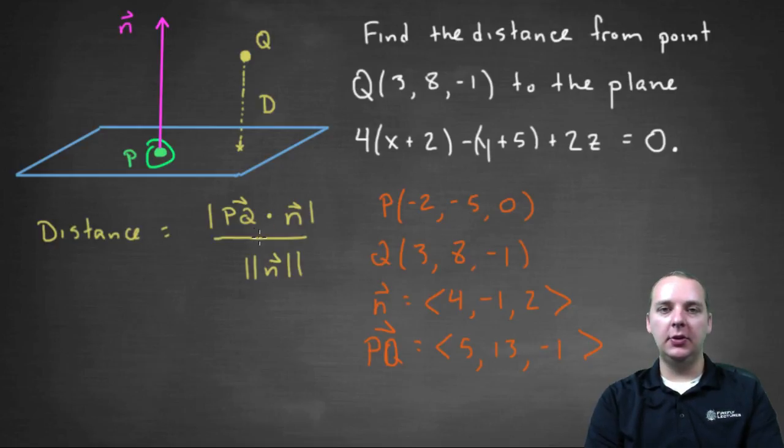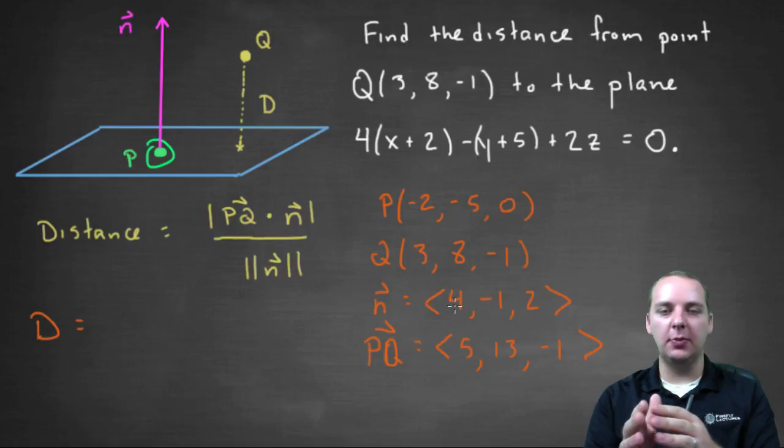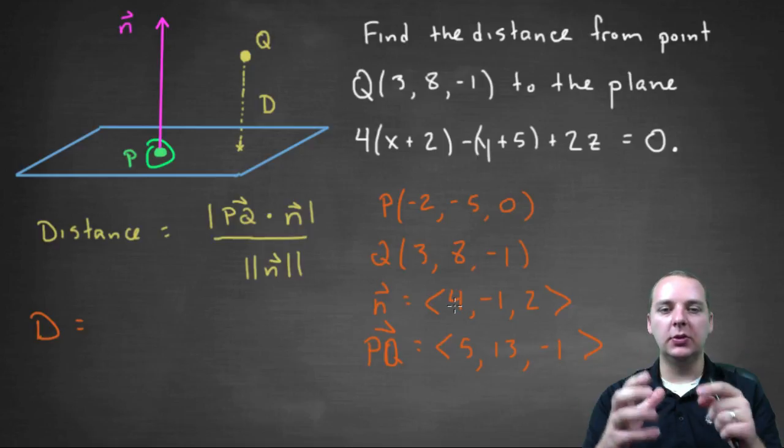So now it's time to use this formula here. And our distance D, the distance from the point to the plane, will be PQ dot n. So let's take these guys dot products. You remember how to do that. You're going to multiply the i-th, j-th, and k-th components, and then add those results together.